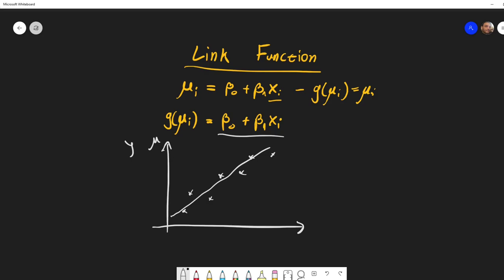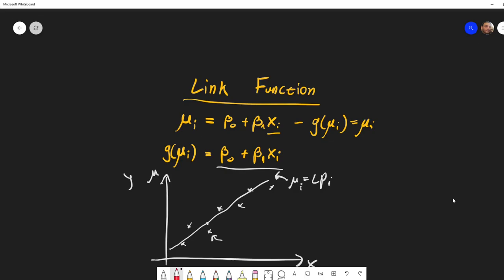Or y also, and this is x, then this line is mu, which is our linear predictor, and these points are the y's. So here would be the mu of that y, and here would be the y of that x.